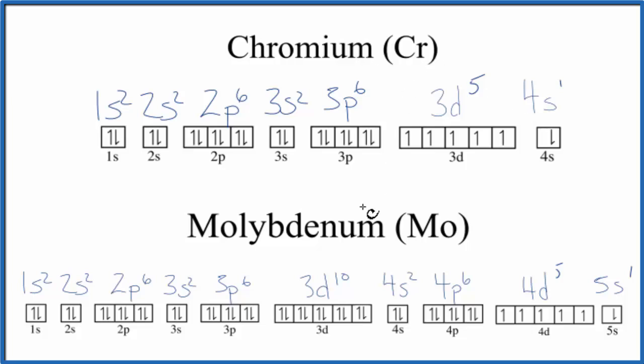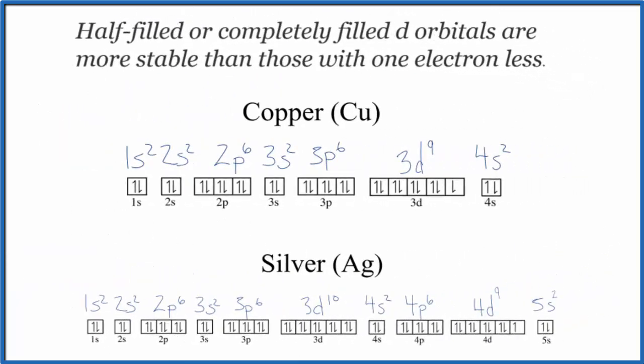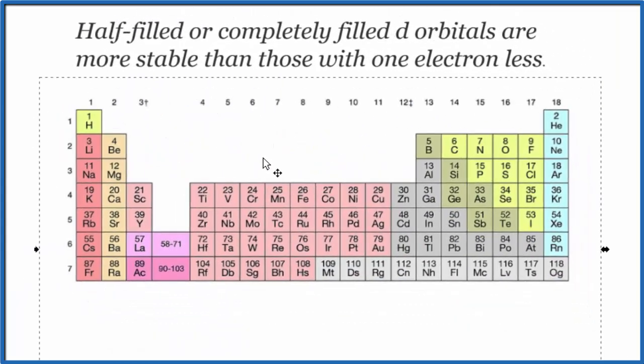Let's take a look at copper and silver. So for copper and silver, let's look at the periodic table again. Here's copper, silver, and then gold. So these all follow the same general pattern.